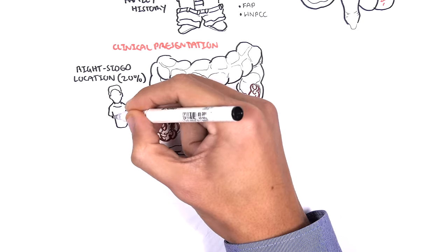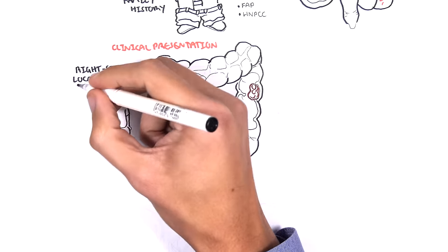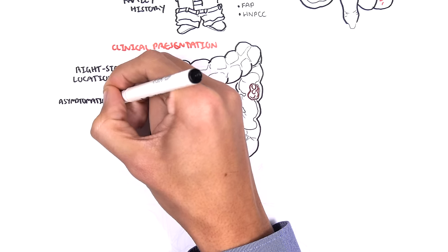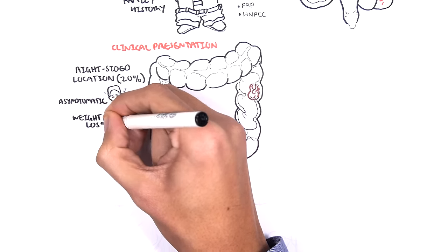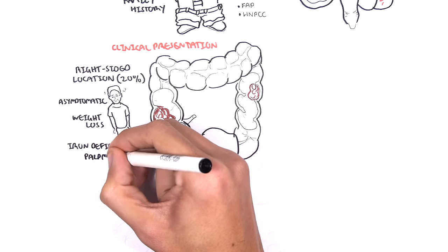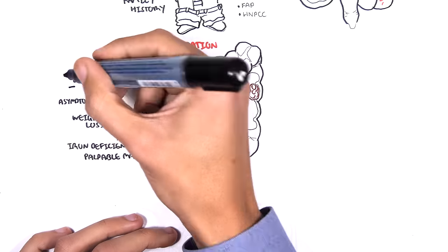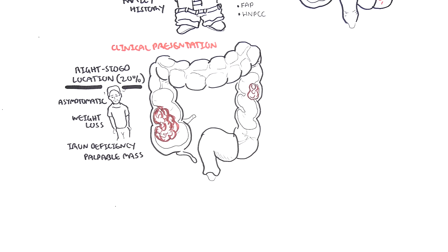Cancerous tumors that occur on the right side account for 20% of cases of colon cancer. People are often asymptomatic, present with weight loss, and iron deficiency. People also present with a palpable mass on the lower right quadrant of the abdomen, and this is because they are often asymptomatic, and so the tumor can grow without notice until signs of weight loss and anemia occurs.